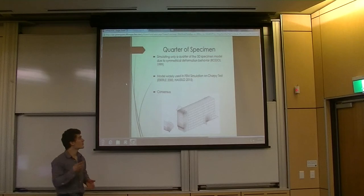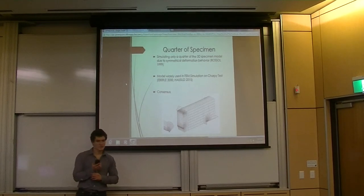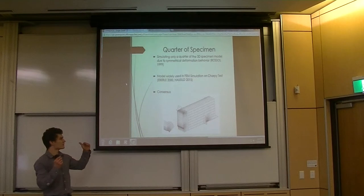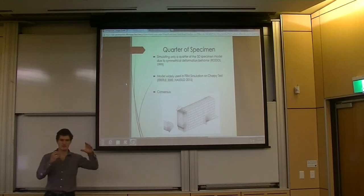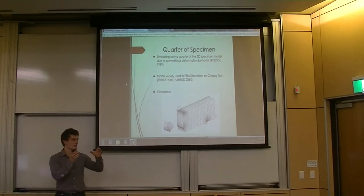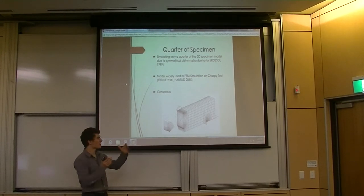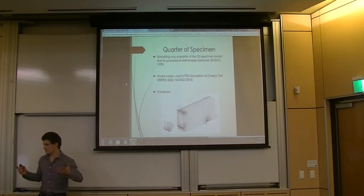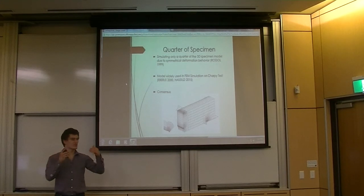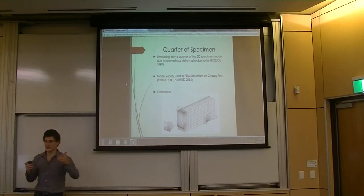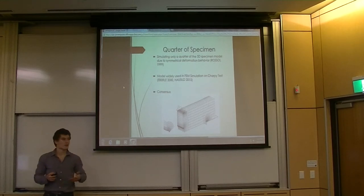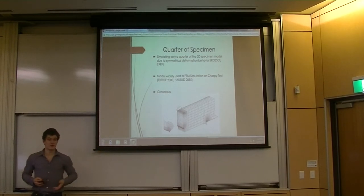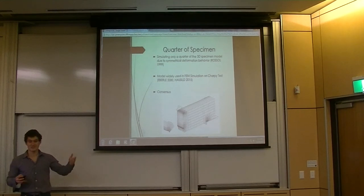Now let's talk about the quarter of specimen. It has been a consensus inside the FEM simulation world that you can represent your specimen in a 3D model by only representing a quarter of it because of symmetrical consideration of the behavior during the test. And this model has been widely used in every study since 1999.